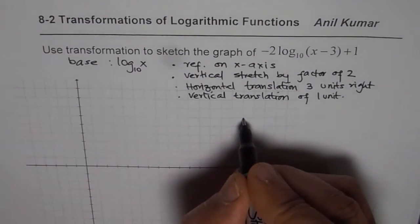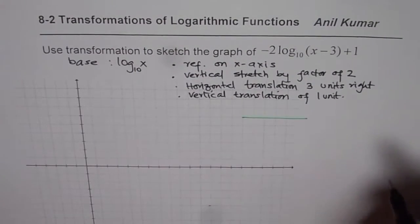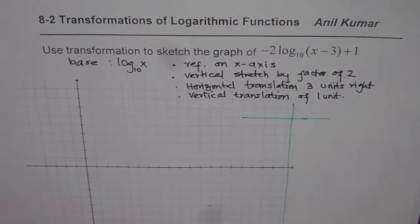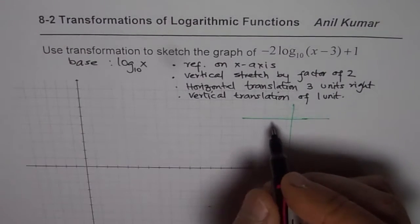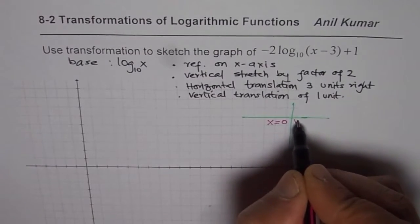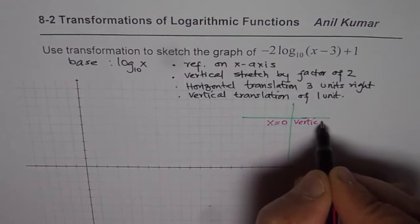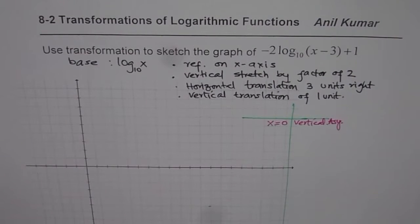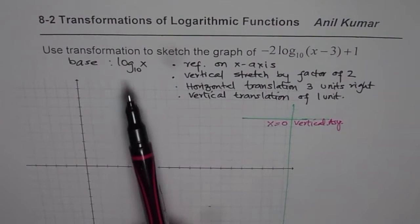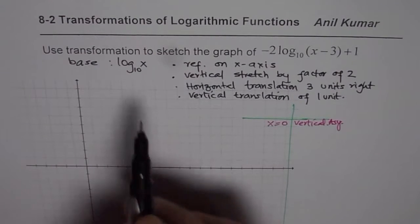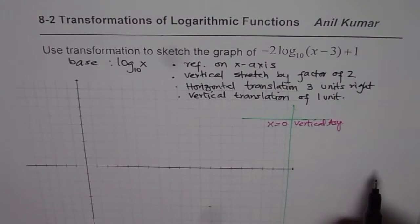Here is how we are going to plot the base function log to the base 10 of x. Whenever you take points for the base function, the foremost point is always the vertical asymptote. So x equals 0 is the vertical asymptote — that is the base to start with. Looking at the base, which is 10, x values are always 10 to the power of something.